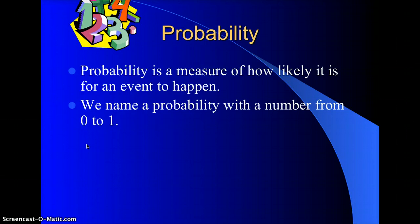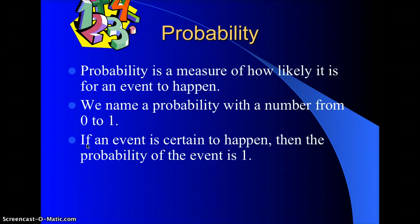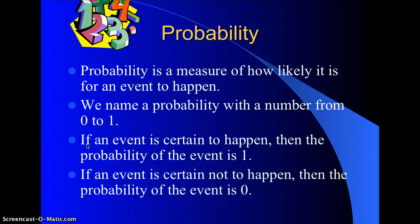So probability is the measure of how likely it is for an event to happen. We name a probability with a number from 0 to 1. If an event is certain to happen, then the probability is 1. And if it is certain that it will not happen, the probability is 0.